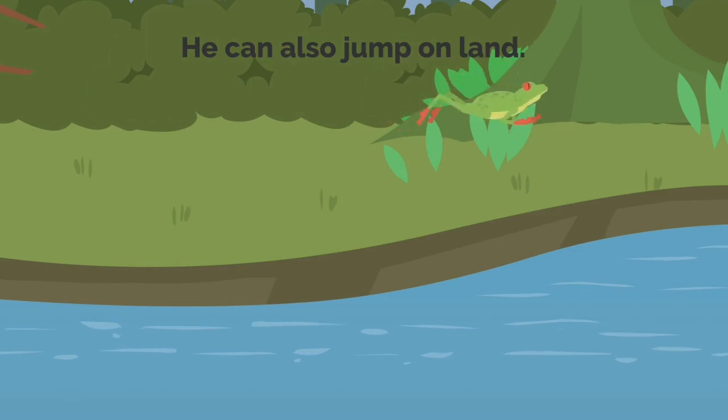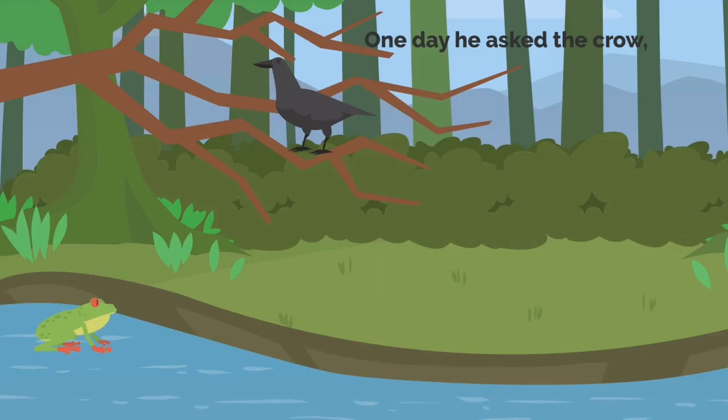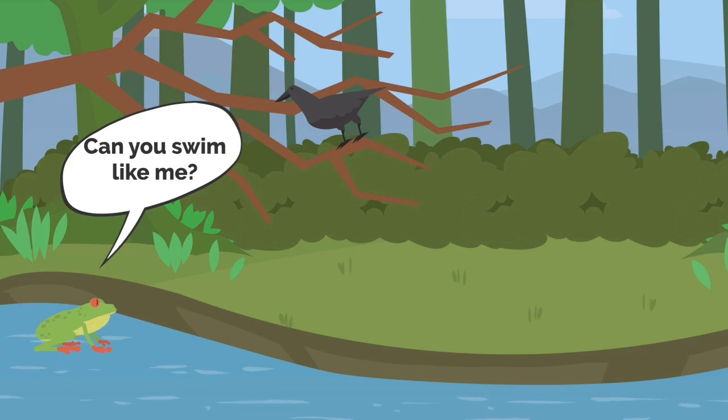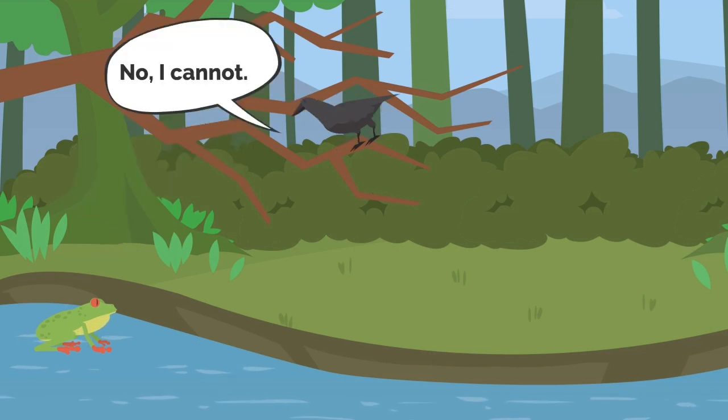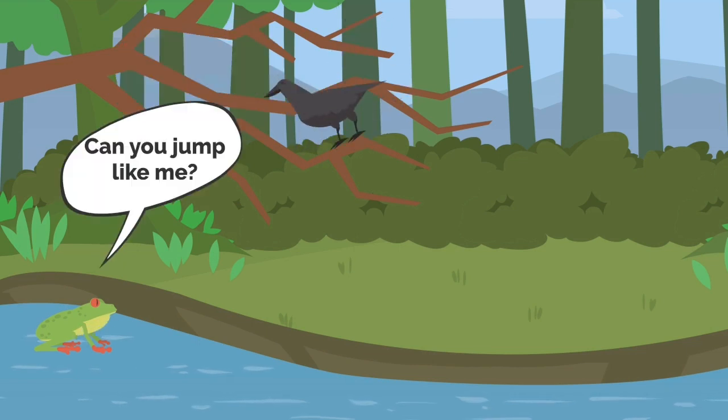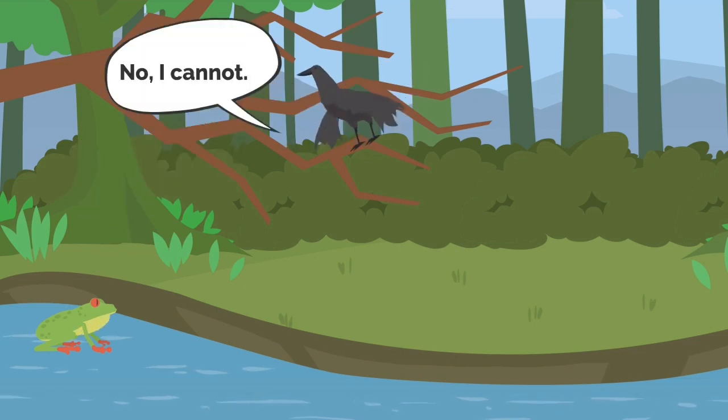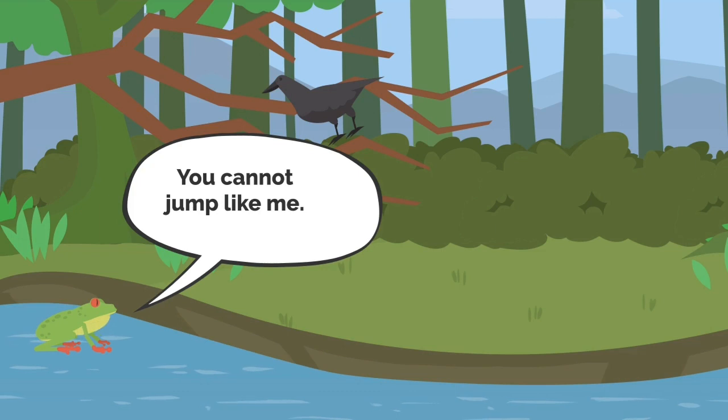He could also jump on land. One day he asked the crow, 'Can you swim like me?' 'No, I cannot.' 'Can you jump like me?' 'No, I cannot.' 'You cannot jump like me, you cannot swim like me. What can you do, crow?'